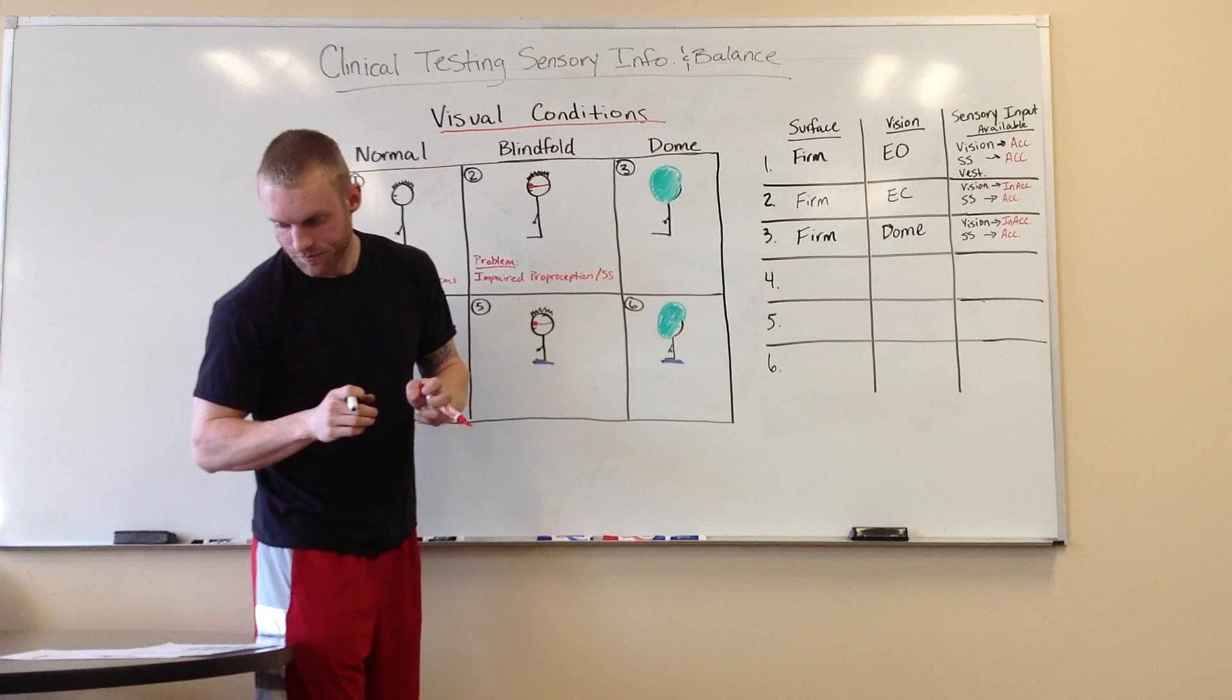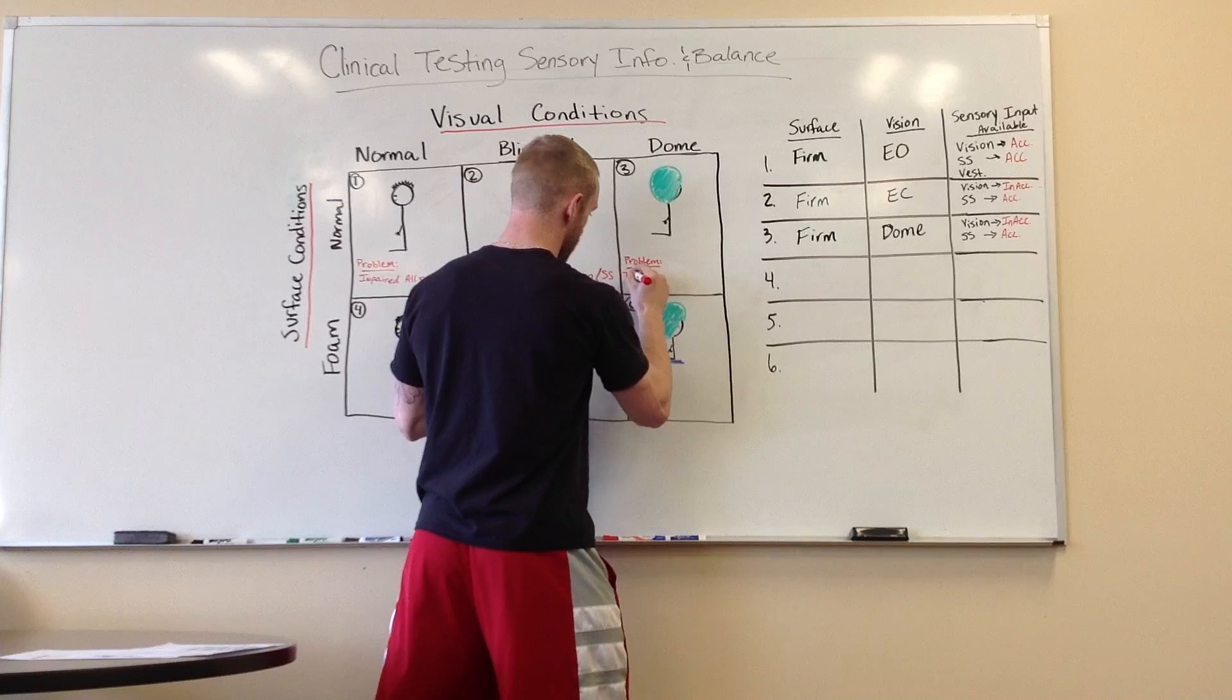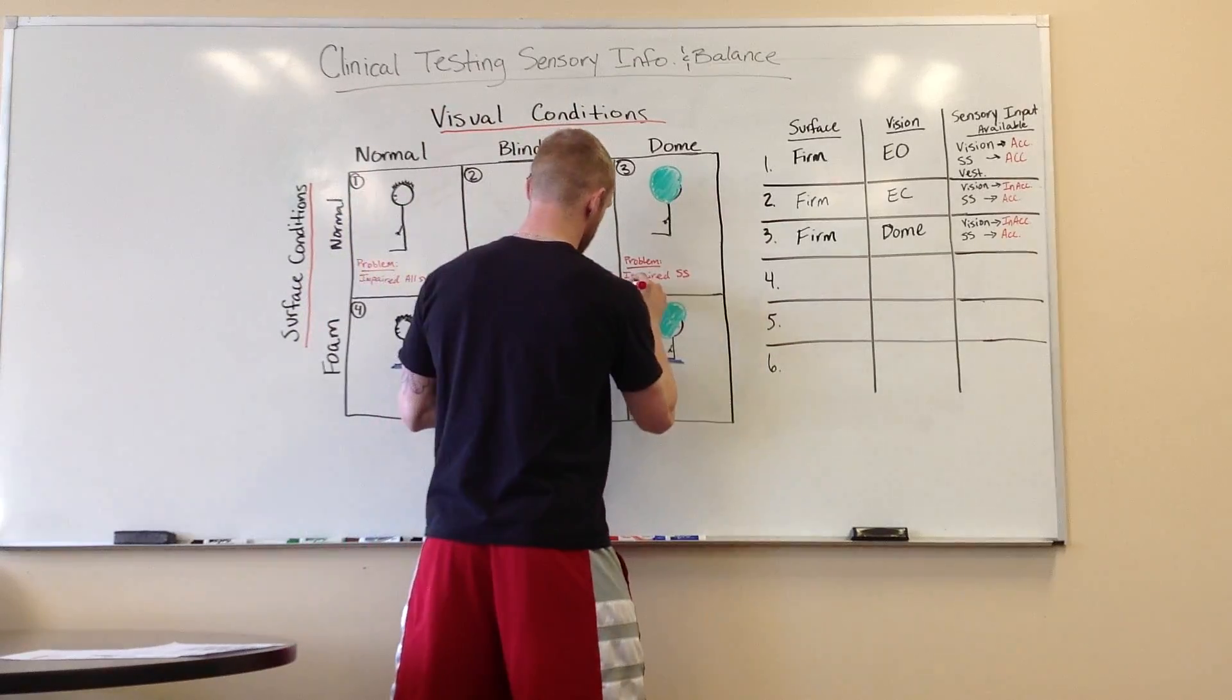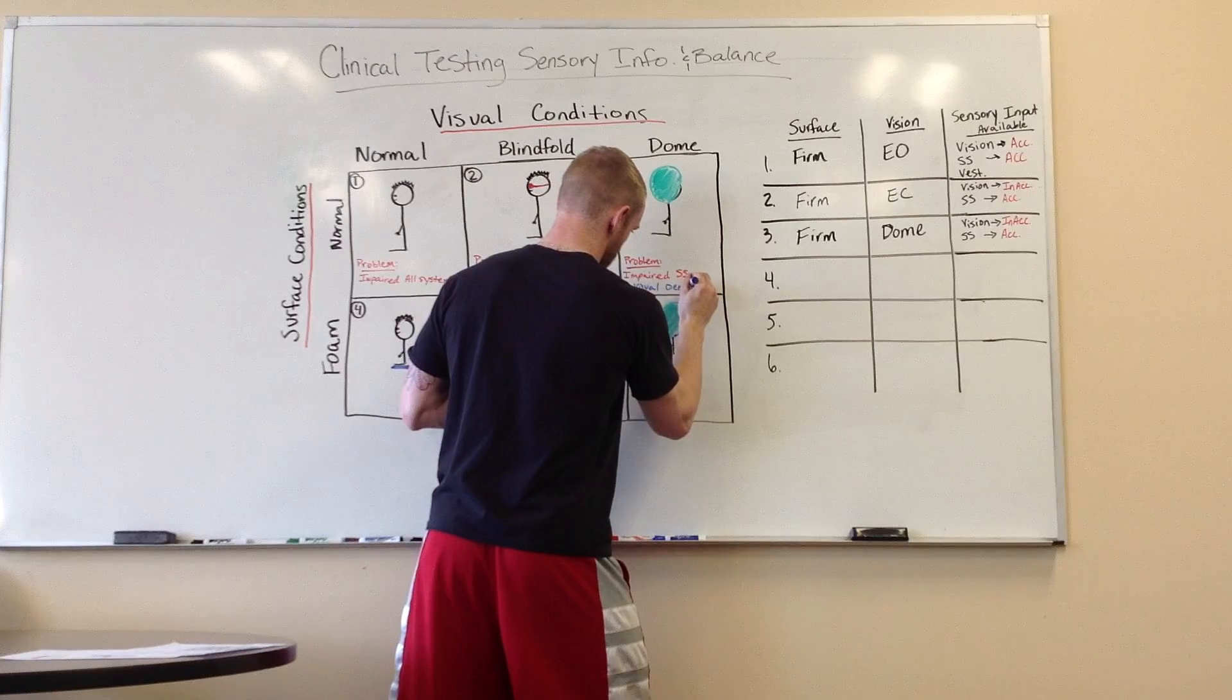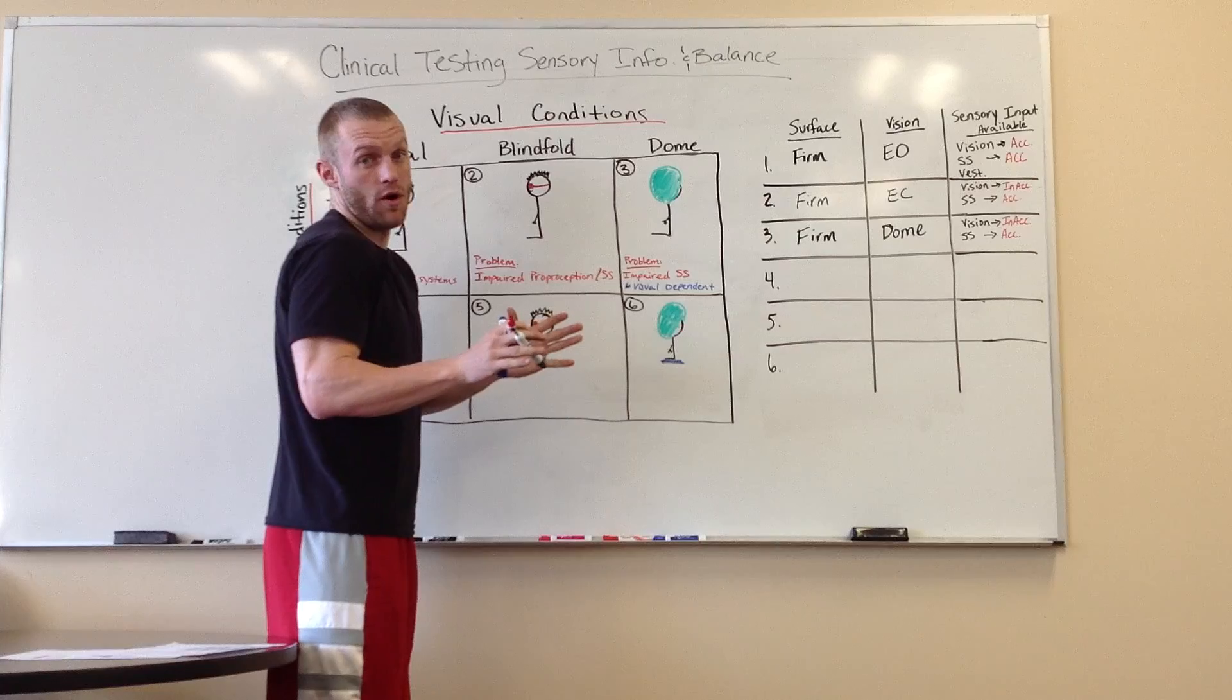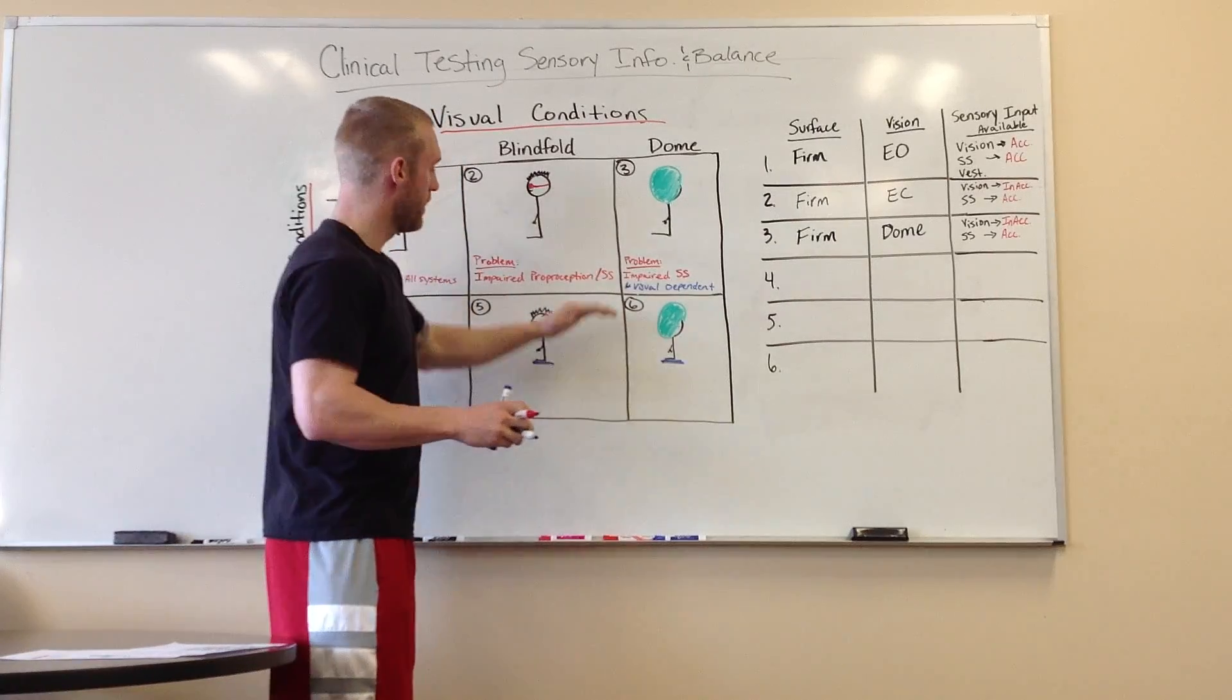So, make sure I got this right again. So, the problem here is pretty much going to be the same thing. You have impaired, I'm going to say impaired somatosensory. And then, that would mean that you are visually dependent. So, if you fail at the dome on the firm surface, you have impaired somatosensory, which means you can't determine where you are. That means you are visually dependent. It means you rely on your eyes. If I were to take this dome off of you, you would be able to keep your balance because you are visually dependent, your eyes would be open, you can see where you are, you're not moving.